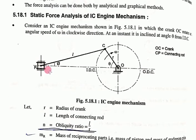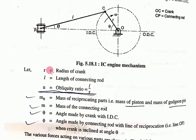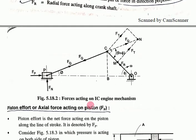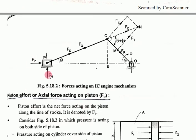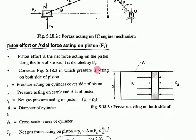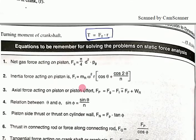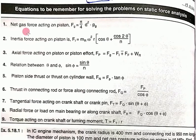In static force analysis, we saw equations generated from a figure showing piston force, normal force, force on connecting rod, and force on crank. The summary includes gas force Fg = π/4 d² pg, inertia force, axial force, and the relation between θ and φ. You must remember these equations.